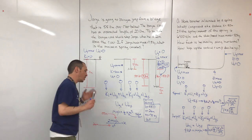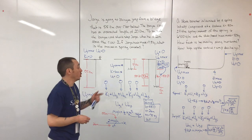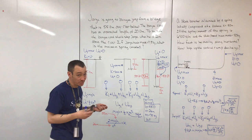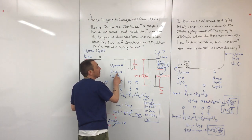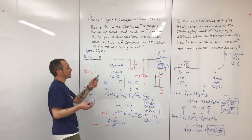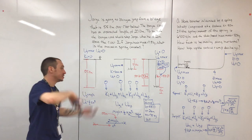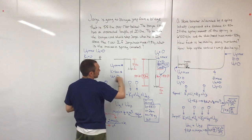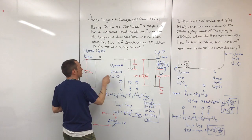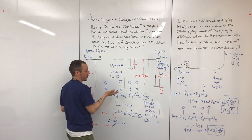This middle situation is a bit tricky, and why it probably might not be so useful is because UG here is going to have some value, and he's going to have some kinetic energy. We could solve for those, but we don't really need to. We like situations where we have maxes and zeros — those are the easy ones to work with. This middle situation, where the cord hasn't started to stretch but he has started moving, might not be the best one to work with.